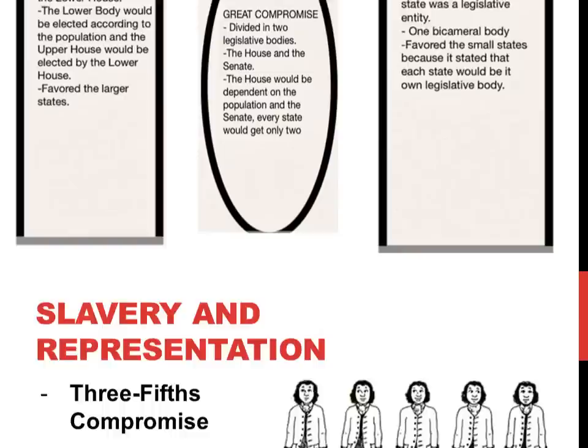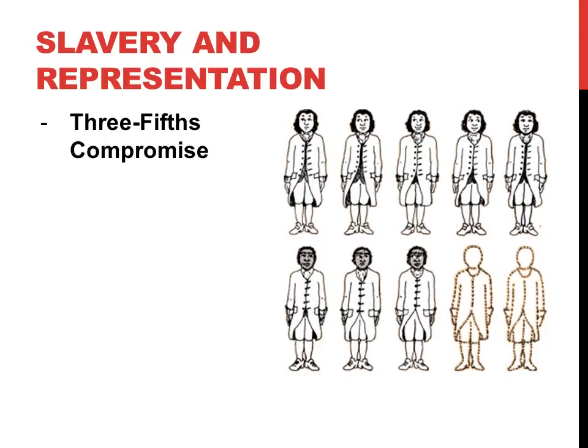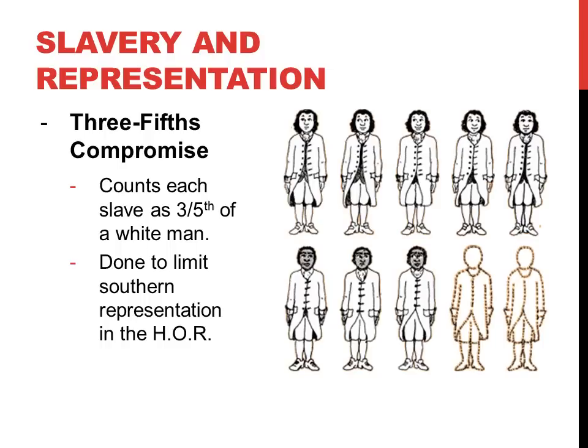With it agreed that the House of Representatives would be based on population, the southern states sought to count their slaves as part of their population to boost their representation. The north, wanting to prevent the expansion of slavery, did not want slaves counted. The two sides finally reached an agreement known as the Three-Fifths Compromise, in which each slave would be counted as three-fifths of a white man. This would limit the south's representation in the House of Representatives but in the meantime prevent civil war.